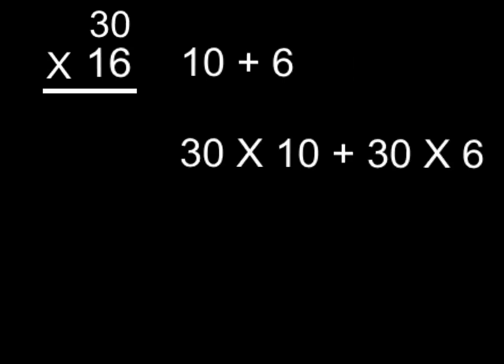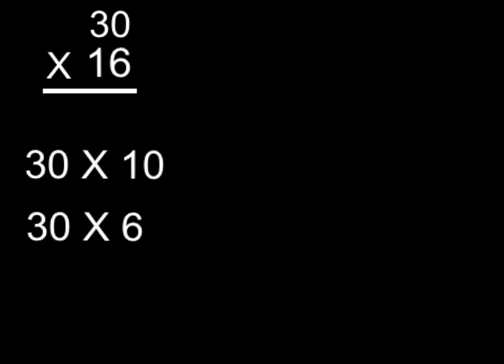What we'll really be doing then is thinking of the problem as 30 times 10, because we broke apart the 16, and 30 times 6. We'll be solving two separate problems: 30 times the 10, and 30 times the 6. Let's draw some arrays out here so you can see what's going on when we multiply.